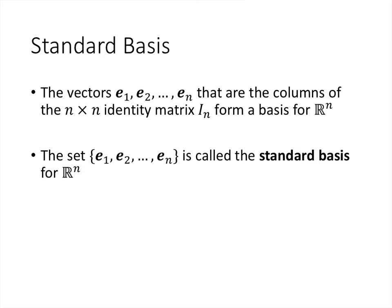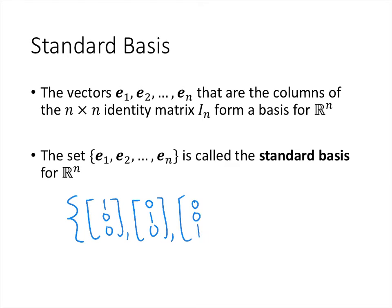As an example, the standard basis for R³ is the set of vectors e₁, e₂, and e₃ — the columns of the 3×3 identity matrix. That is the standard basis for R³.